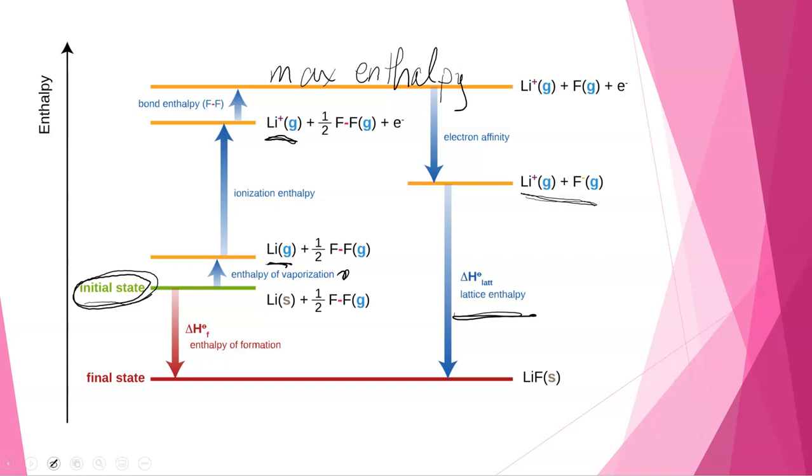The lattice enthalpy is very large. You get a lot of energy out when you put a lattice together. And so it is the largest arrow. The difference between where we started, our initial state, and where we've ended up here at the end, our lithium fluoride, is the enthalpy of formation for lithium fluoride.